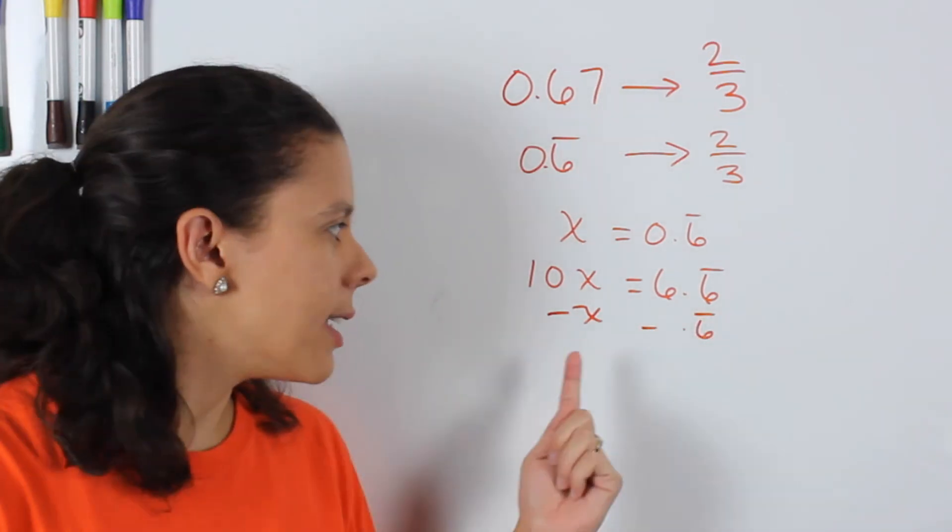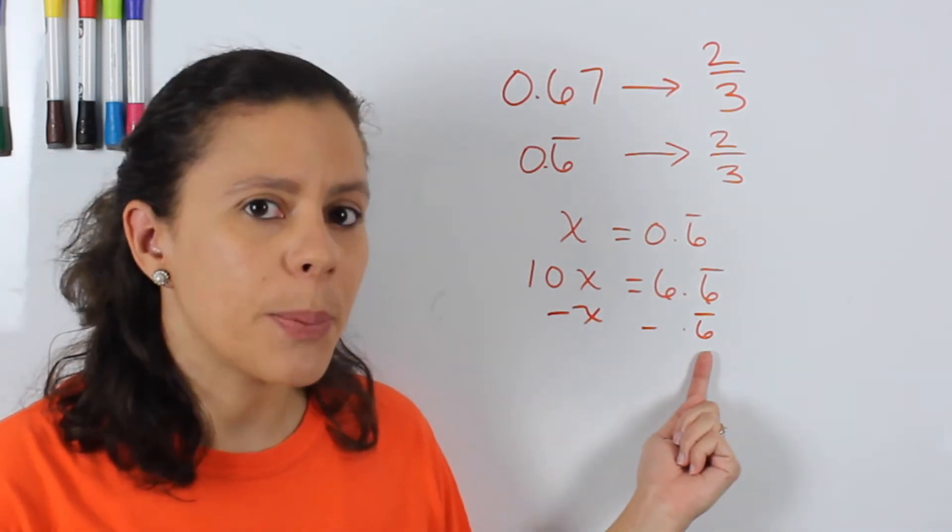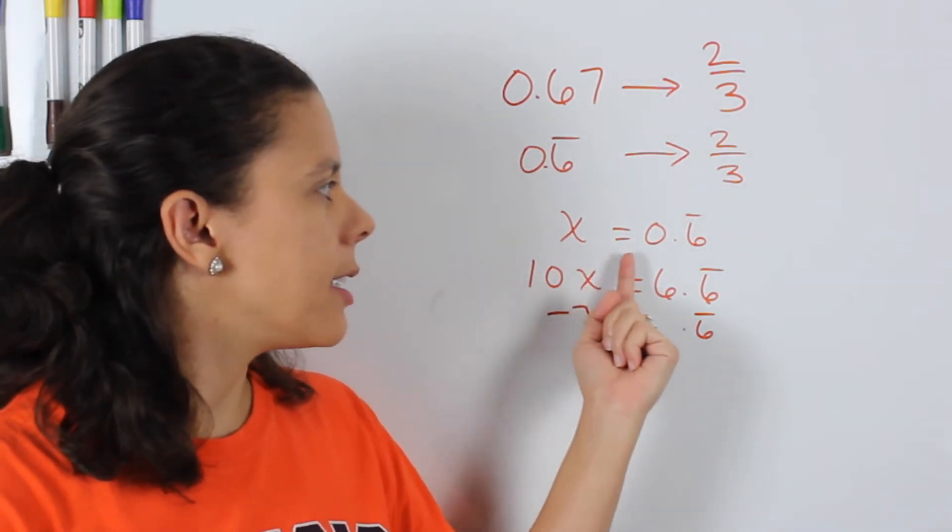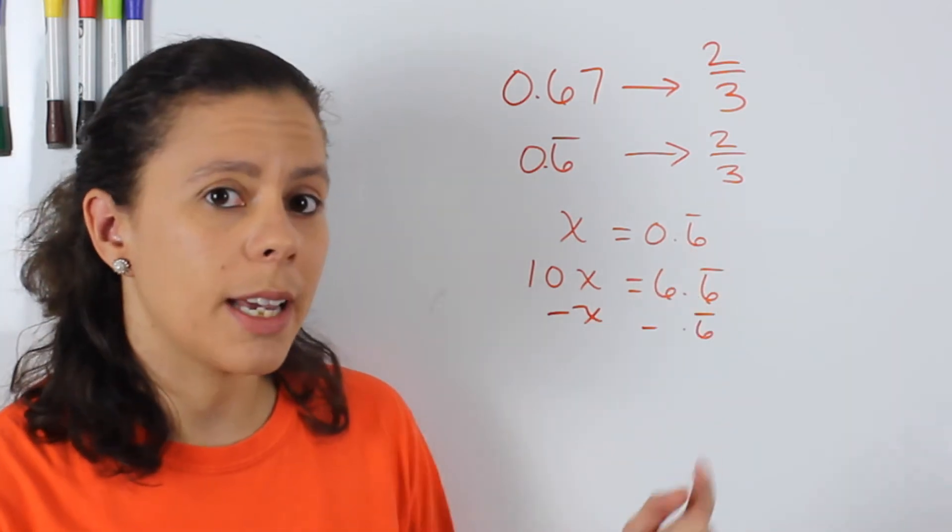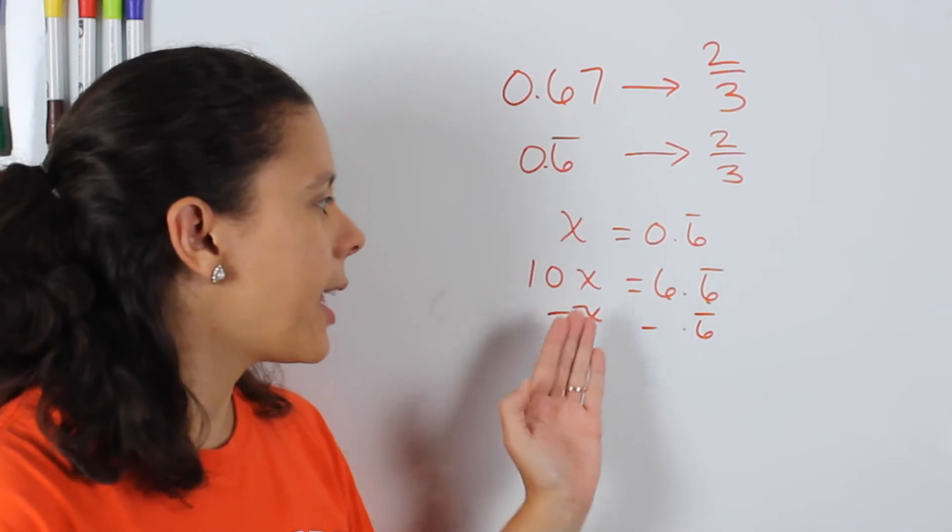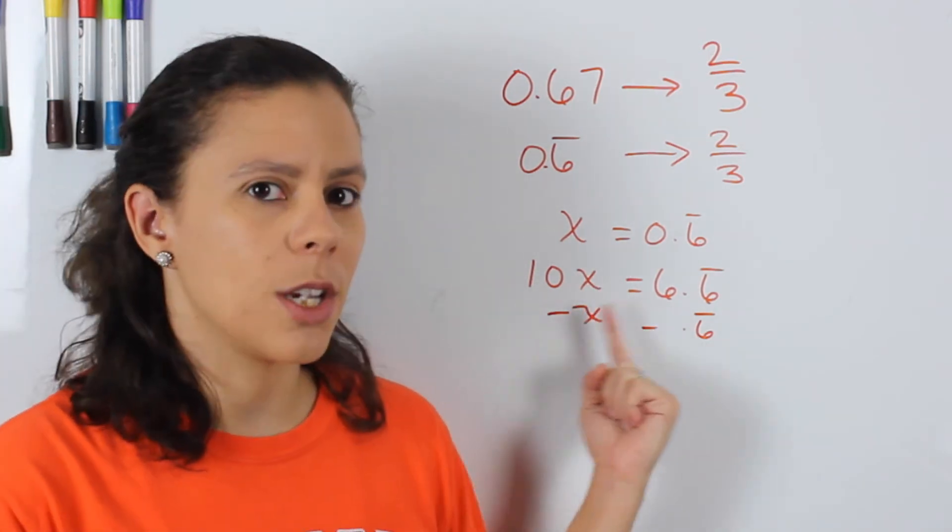Why? Because x and 0.6 repeating are the exact same thing. Also, because x equals to 0.6 repeating, it's an equation that has the same value for x, so I can actually subtract it from the other equation.